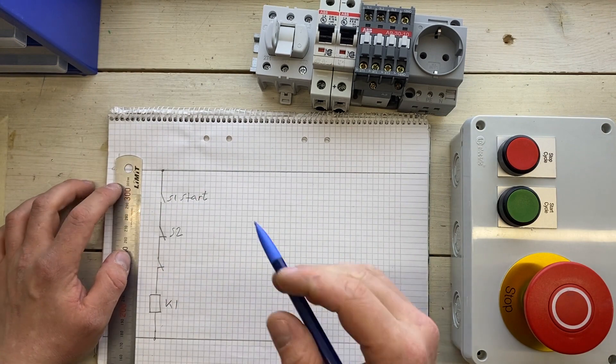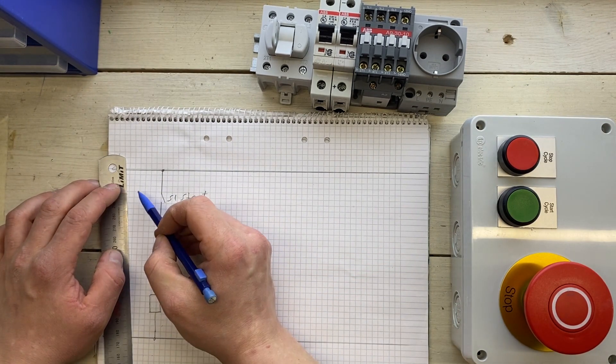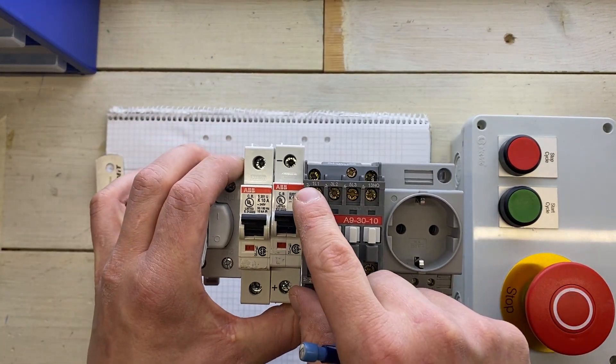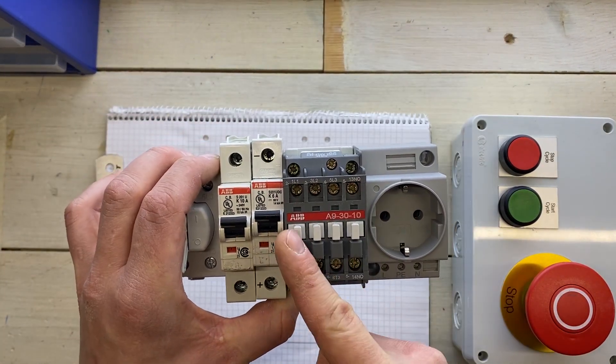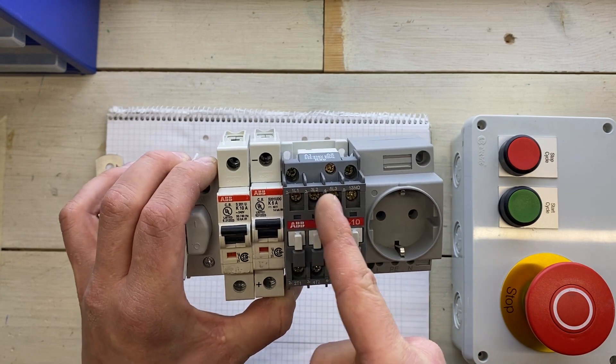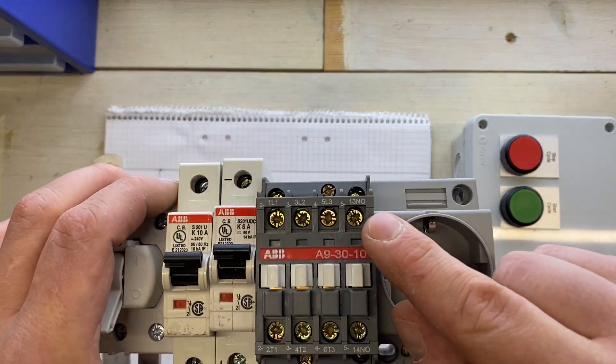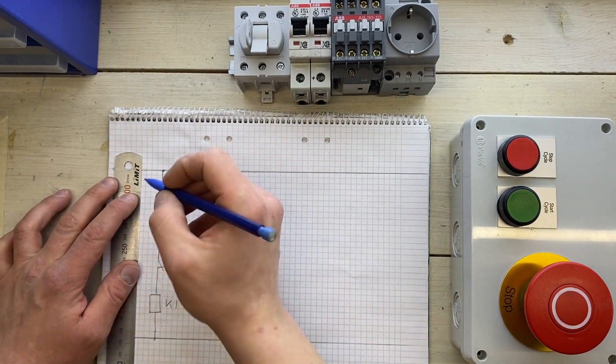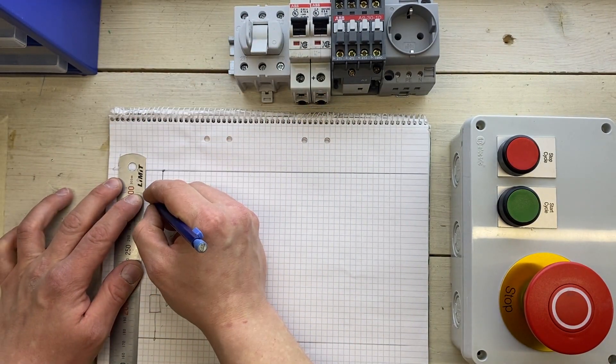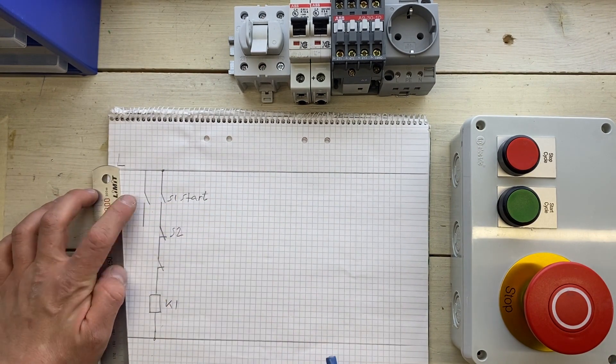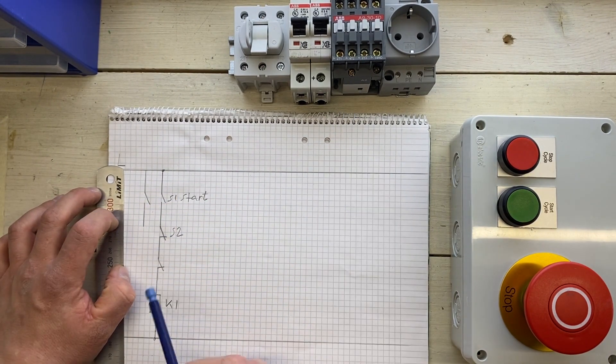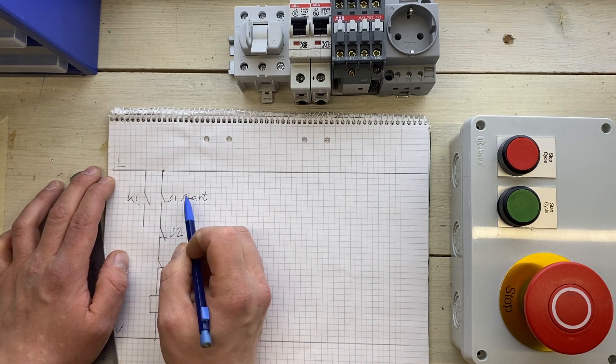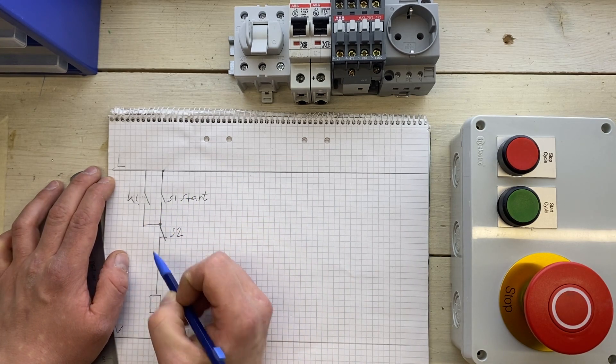So that means we add a redundant contact up here. And as you can see, this one has four contacts in line. And if you run three phase you only need three ones. So you have an extra one that's labeled as normally open. And we will use this one. So we will add another normally open switch. And this one is of course pulled by the relay. That's K1. And if we attach this one in parallel to the S1 start button, like this.